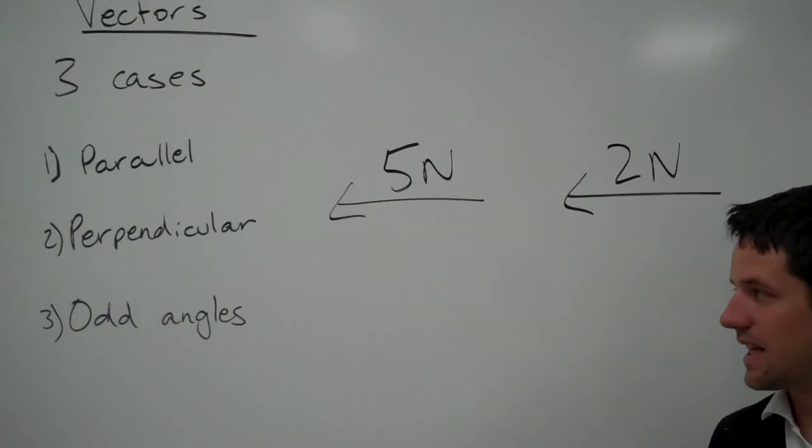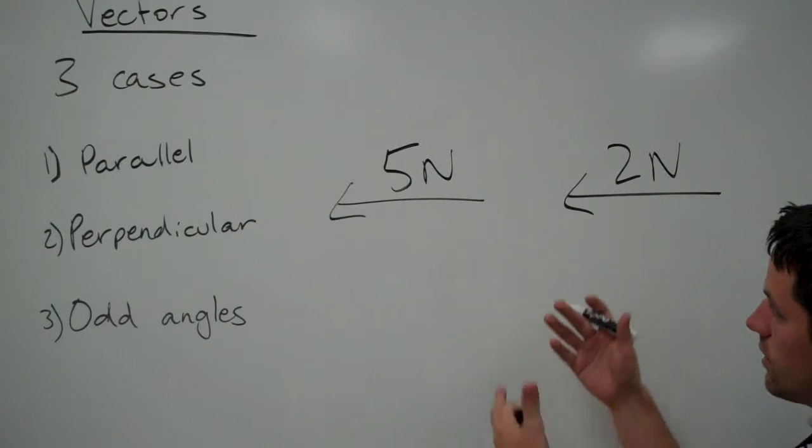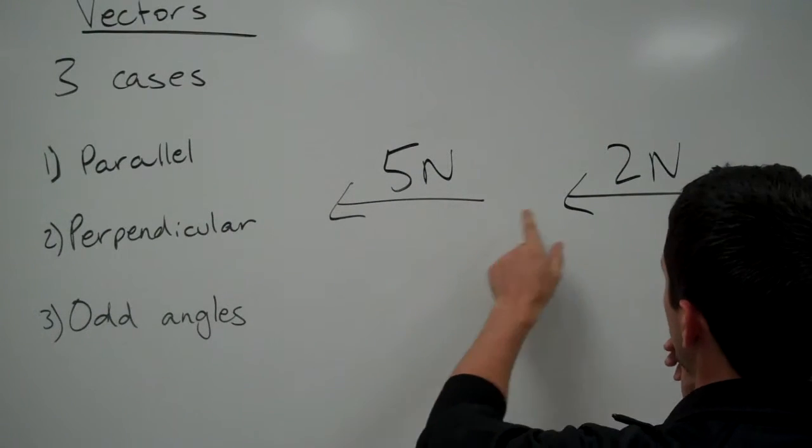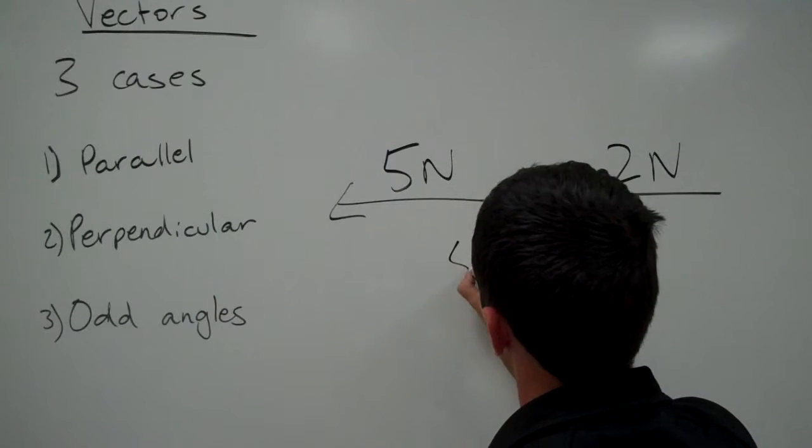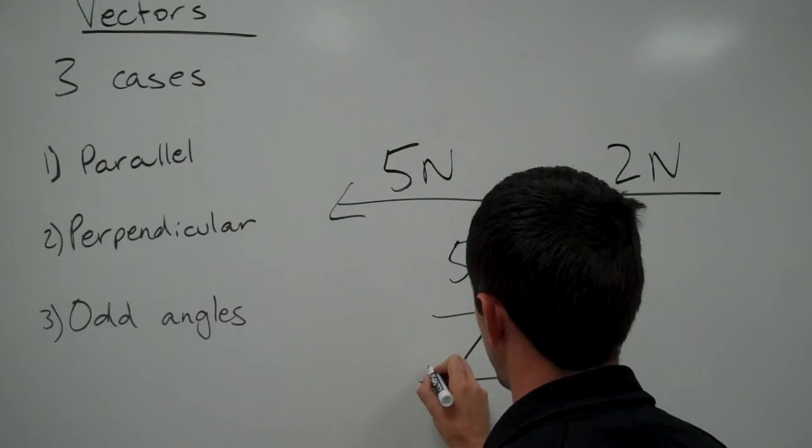If I wanted to combine these because they're going in the same direction, they would add together. So combining these vectors, I have a 5 newton vector and a 2 newton vector, and I have a new vector that is 7 newtons.